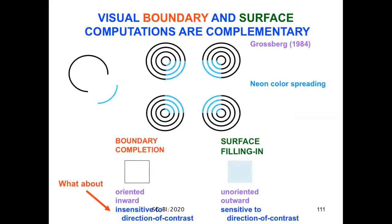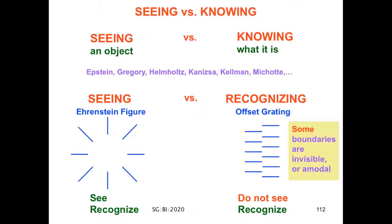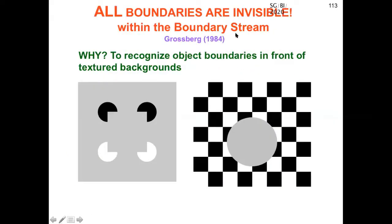What about this third property: insensitivity to direction of contrast? That's the difference between seeing versus knowing or seeing versus recognizing. For example, in the case of the Ehrenstein figure, all it is is these blue lines, but you can both see and recognize the emergent circle because of the illusory brightness that's trapped inside. In the case of the offset grating, you can recognize the vertical boundary—it's quite salient—but there's no brightness, color, or depth difference. So you don't see it. You recognize it but you don't see it, showing that some boundaries are invisible or amodal. So we can consciously recognize things we don't see. But I actually showed many years ago that all boundaries are invisible in the boundary stream. There are several fundamental reasons for this, one being to be able to recognize object boundaries in front of textured backgrounds.